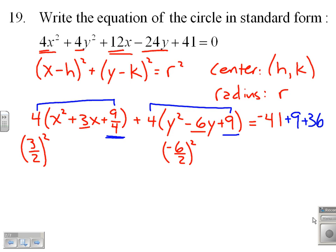Okay, at that point, I should have completed squares. So on the left, I have 4 times, well, this must be x plus 3 halves squared plus 4 times y. This must be a minus 3 squared equals negative 41 plus 9 plus 36, which is 4.